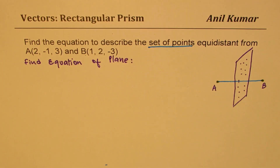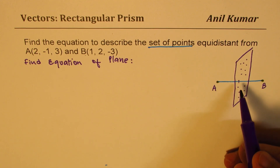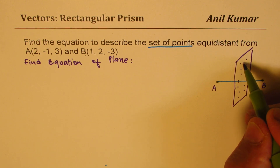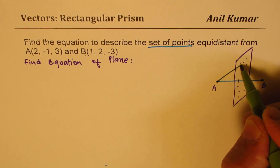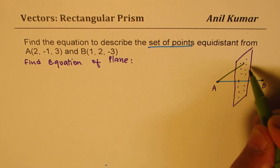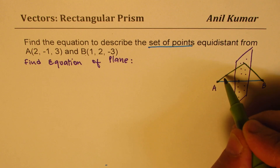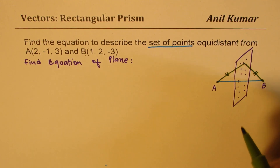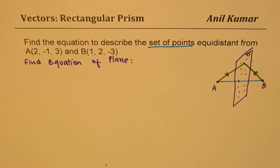Now, this will actually be discussed in Unit 7. So at present you are not quite ready for solving this on your own. What I am trying to say is that any point on this plane, for example this point, will be equidistant from both. So we have to find the equation of this plane. Normally we write it with the letter pi.